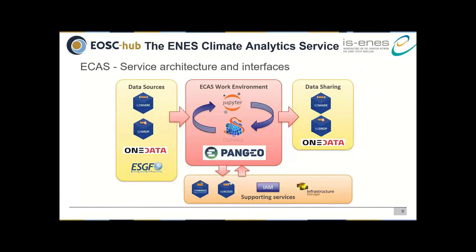Now, two or three slides to describe what the ECAS service is all about. The key components: it's essentially the JupyterHub environment interconnected to different compute backends. We will concentrate on two backends — one is Ophidia, a big data handling environment targeted to our community, and then we are also supporting Pangeo as a backend. Pangeo is a relatively new ecosystem of open source tools very helpful for our community, and we will also focus on using tools like xarray to access data.